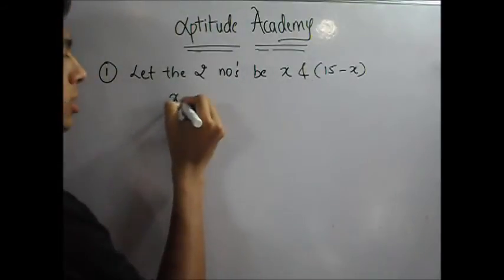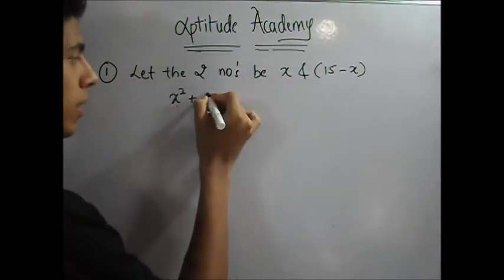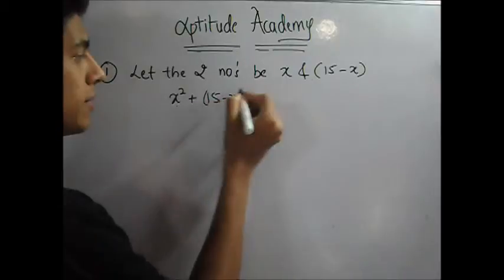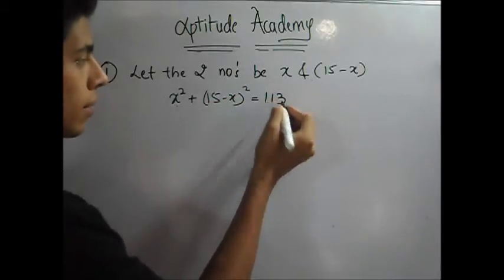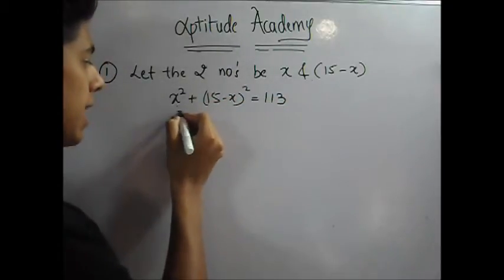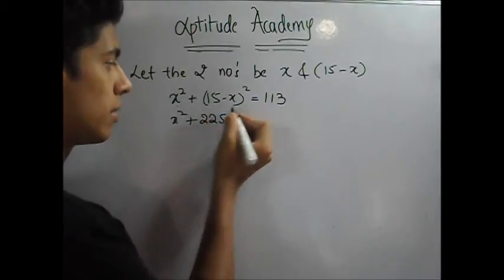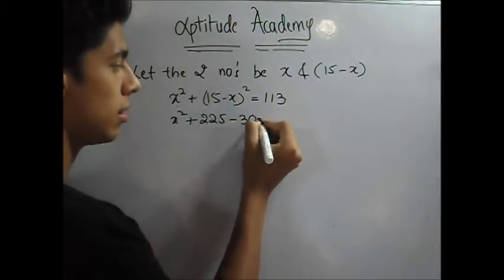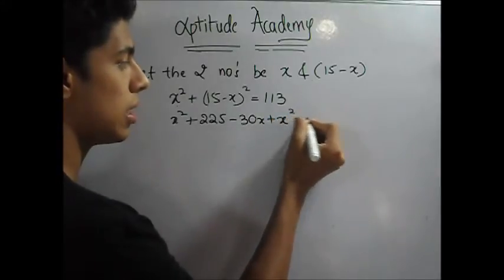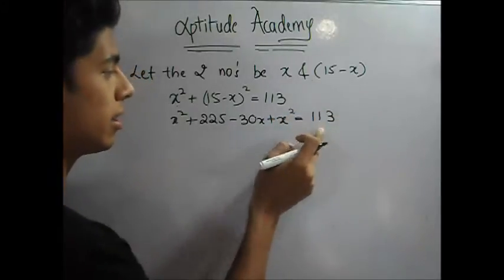Now they have also said that the squares when added together, it gives you 113. Now let's simplify this. This is x square, which is A minus B the whole square.